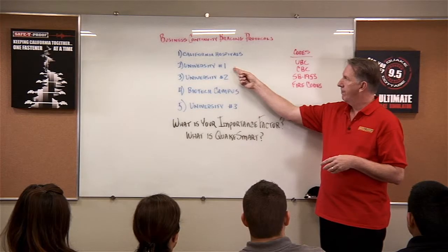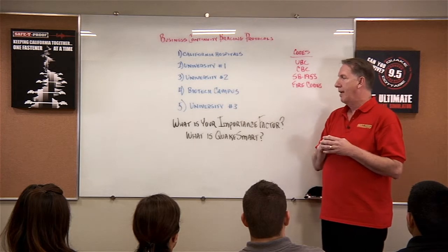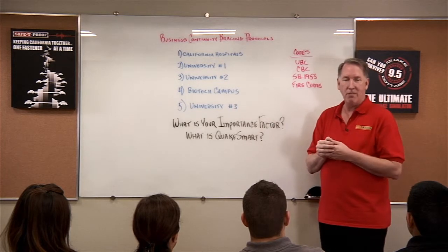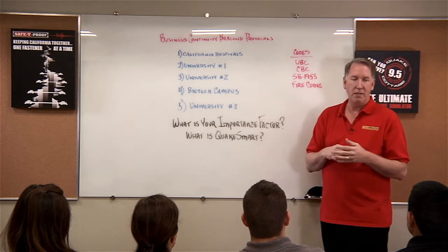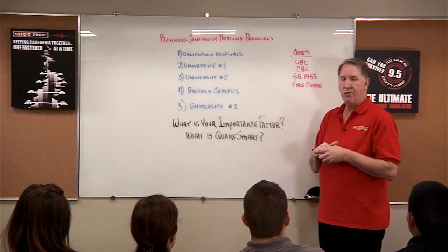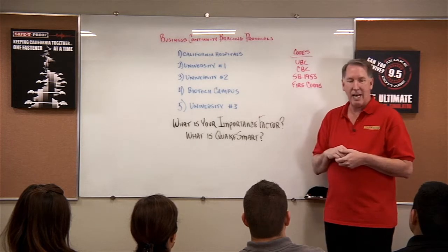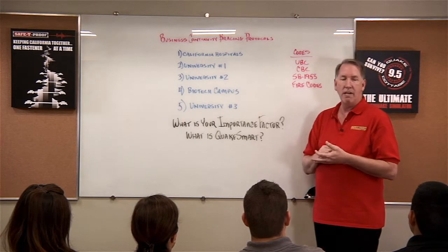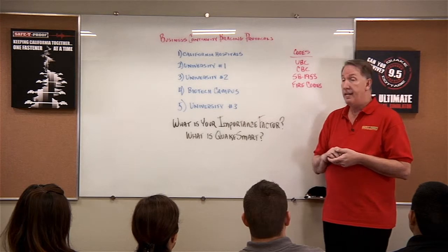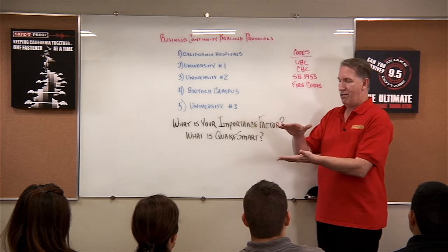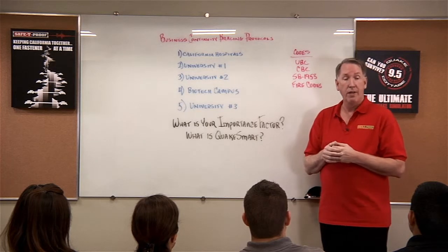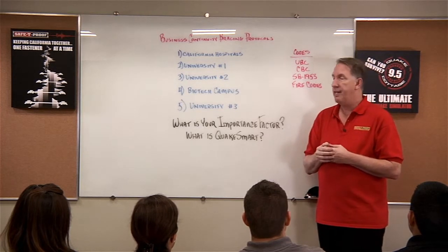There are some other examples. University number one covers a lot of different acres, with all different types of buildings in Northern California — new and old buildings with labs, dorms, meeting halls, and cafeterias. The protocol the university has established is that if the value of the item is more than twenty thousand dollars, that item must be secured. It doesn't matter how big it is, where it's located, or what its function is. What drives the bracing protocol is the value of the item — twenty thousand dollars or more.